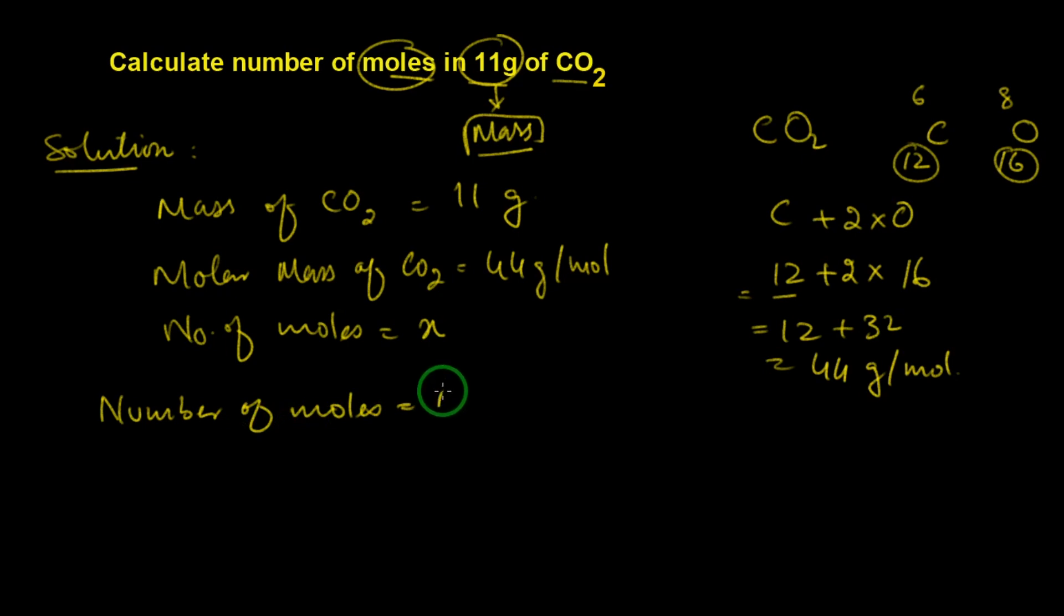Number of moles equals given mass in grams divided by molecular mass. So number of moles would be equal to mass in grams given, which is 11 grams. We write 11 grams over here. Molar mass we found is 44 grams per mole.